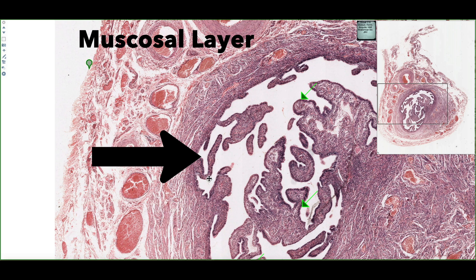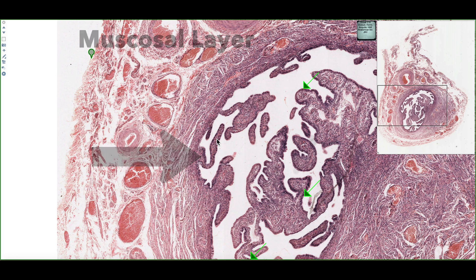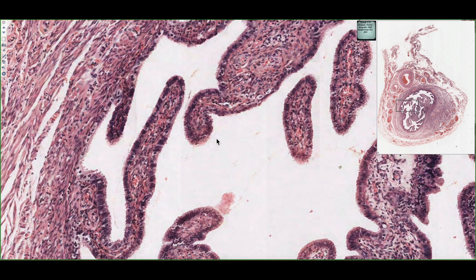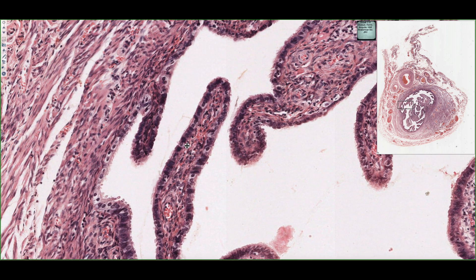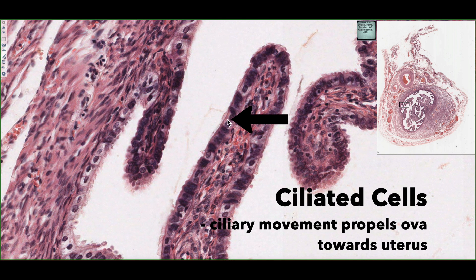The oviduct has two distinct cell types. If we look at this mucosal fold in the center of the screen and zoom in, we can clearly see the two cell types. We can see cells that have cilia projecting from their apical surfaces. These are aptly named ciliated cells, and they help propagate the ova as it's released — brought in by fimbriae into the infundibulum and along the ampulla — brushing the ova towards the uterus.